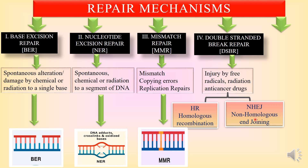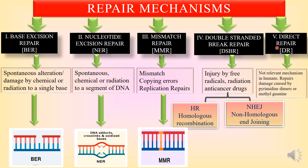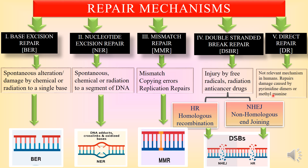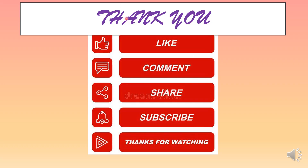The fifth kind is direct repair, which is not a relevant method in humans. The damage in this case is caused by pyrimidine dimers or methyl guanine. You can see that in the double-stranded break repair, both strands are damaged and can be repaired by two mechanisms: homologous recombination and non-homologous end joining.